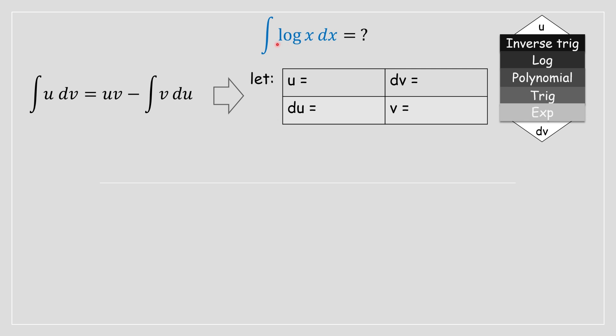We have a polynomial and a logarithmic function. Therefore our logarithmic function will correspond to u and the polynomial will correspond to dv. So we've established that our u variable will be log base 10 of x and our dv variable will be 1 dx.